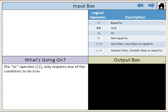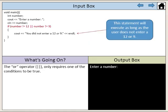The OR operator only requires one of the conditions to be true. In this example, the condition evaluates to see if the value of a number is not equal to 12 or if the value of a number is not equal to 9. This statement will execute as long as the user does not enter a 12 or 9.